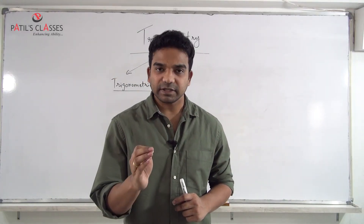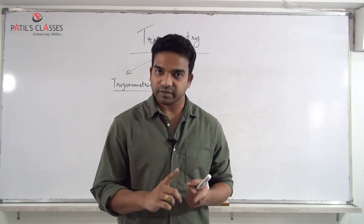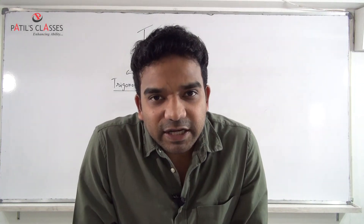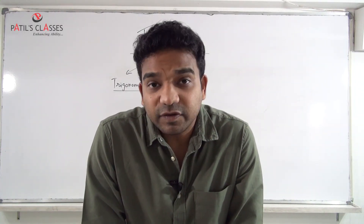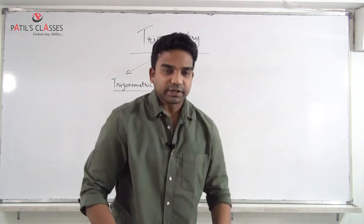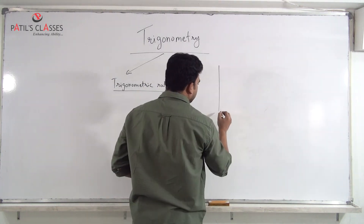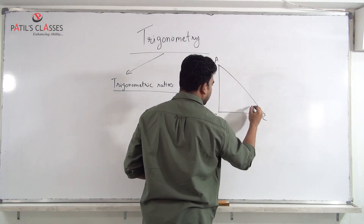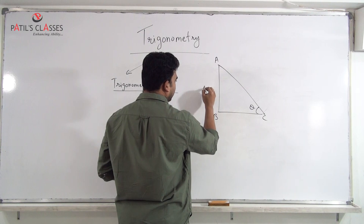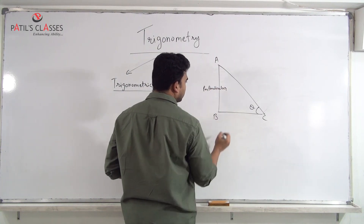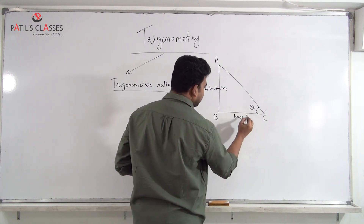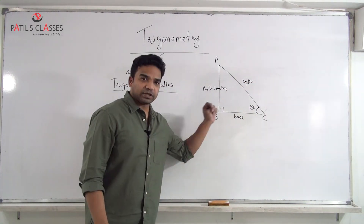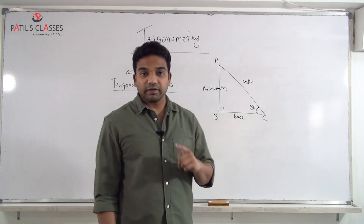I will teach you the best way to remember the basic definitions of sin θ, cos θ, and tan θ, because the other three trigonometric ratios you can keep as reciprocals. In triangle ABC, if this angle is theta, then the opposite side is the perpendicular, the adjacent side touching theta is the base, and the side opposite to 90° is the hypotenuse.